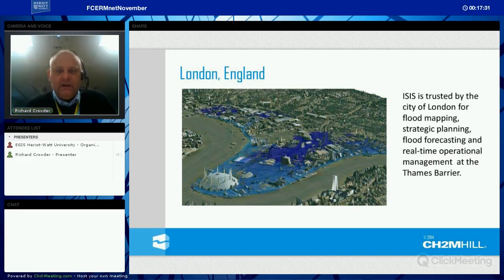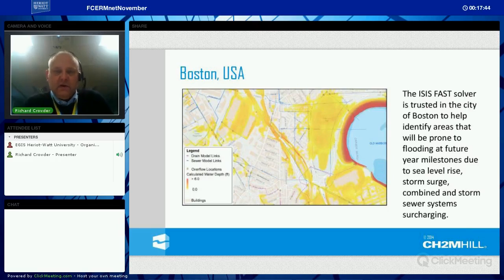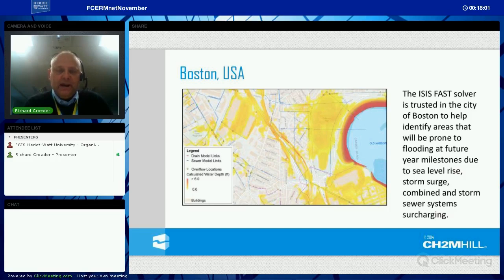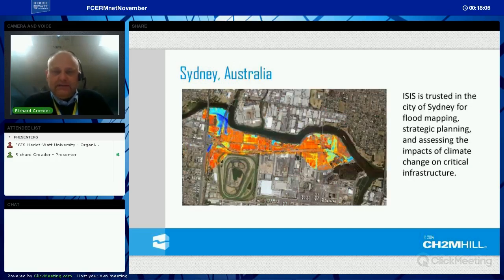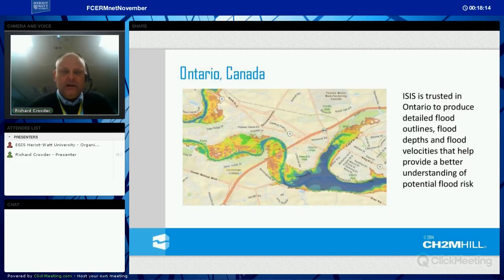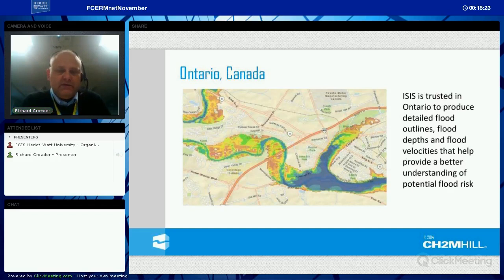In London, the software has been trusted for flood mapping and strategic studies — it's part of the flood forecasting system and the operational tools at the Thames Barrier. In Boston, the FAST solver was used to identify flood-prone areas at future milestones, using sewer model results in a surface water 2D model with direct rainfall. In Sydney, it's been used for detailed strategic planning and understanding the impacts of climate change on critical infrastructure. In Ontario, Canada, free open source data was used to quickly update local flood maps not updated for almost 40-50 years — the study was completed in just a few days.